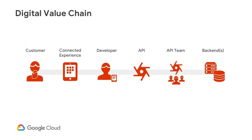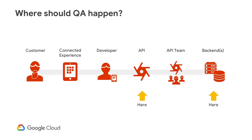Let's look at the digital value chain again. Consider where quality assurance should be implemented. In most organizations, we quickly identify the technical areas. Your backend servers and APIs must be clear of defects to ensure you are generating great and quality digital experiences. However, focusing solely on protecting code integrity is only the start of a quality assurance strategy.